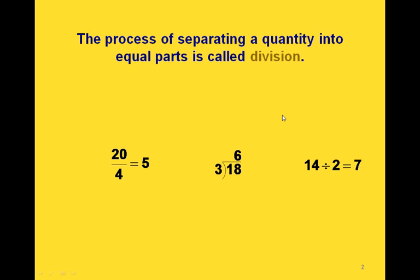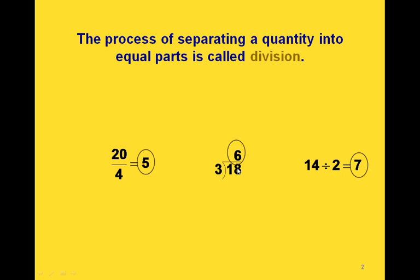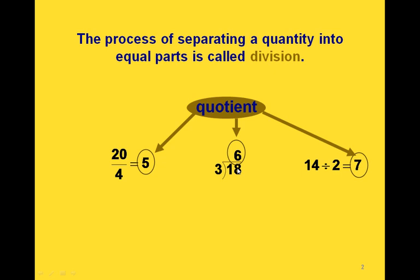So for example, we can take 20 divided by 4, which equals 5; 18 divided by 3 is equal to 6; and 14 divided by 2 is equal to 7. We're going to look at the 5, the 6, and the 7 — those are all the results of the division, so those are called quotients.